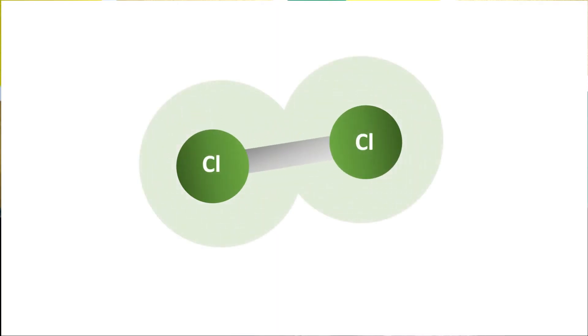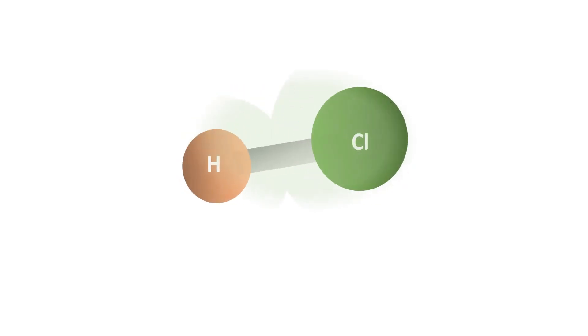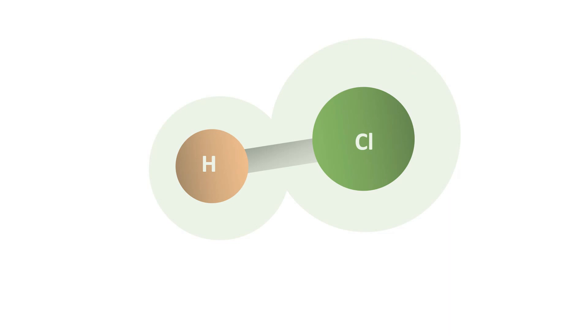Cl2 and HCl are both covalent compounds. Did you know that in the Cl2 molecule, the electrons are distributed equally on both ends of the molecule. But in HCl, the electrons are concentrated at one end of the molecule. Why did this happen?